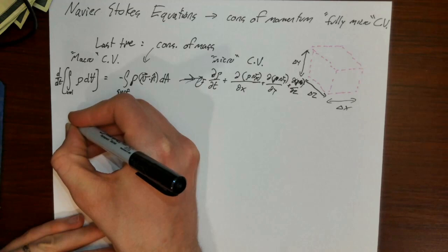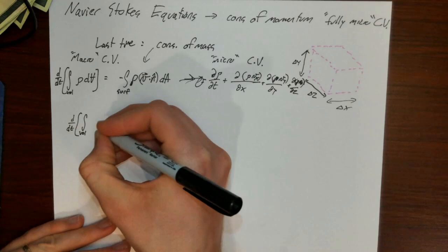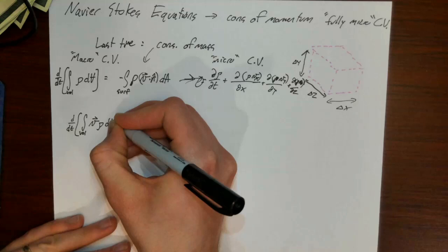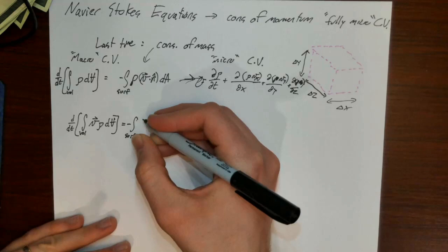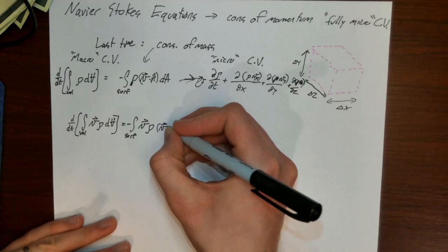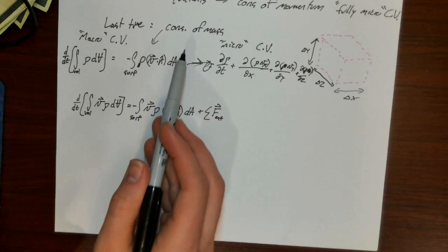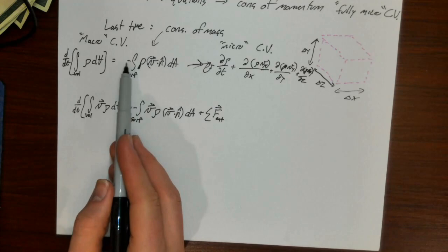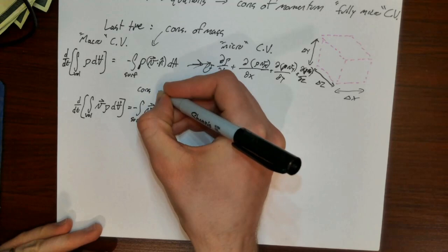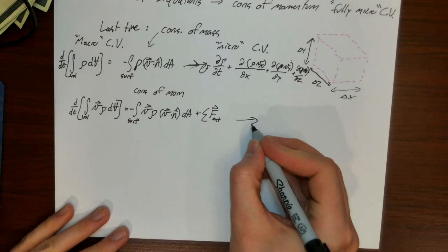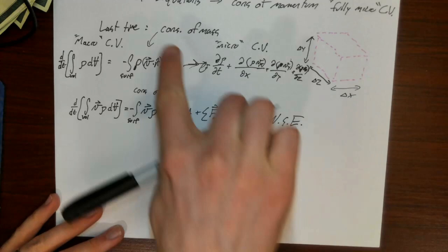So if we have macro conservation of momentum, it looks something like this: the time derivative of an integral over the volume of velocity times rho dV, equal to minus an integral over the surface of velocity times density times V dot n dA, plus the sum of any externally applied forces to the control volume. If you apply conservation of mass to the micro control volume, you get the continuity equation. And if you apply conservation of momentum to the fully micro control volume, you get the Navier-Stokes equations, which is what we're going to talk about today.